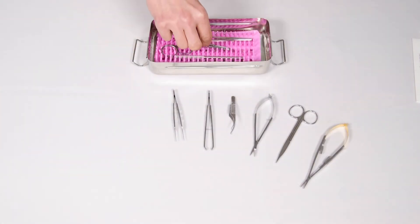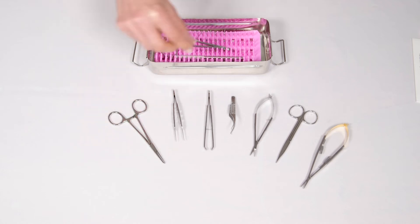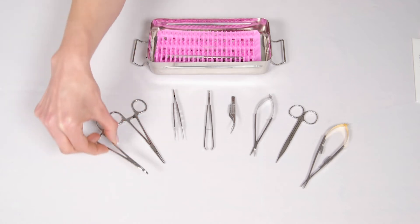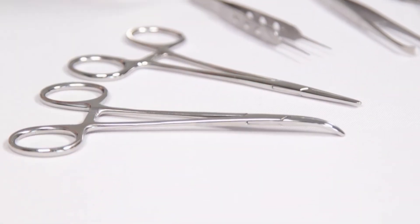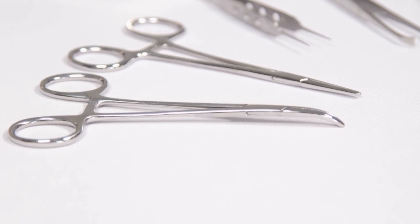Two Holstead mosquito forceps are also included, one straight and one curved. The small size of these haemostats make them suitable for delicate surgery.